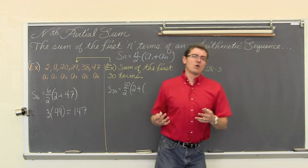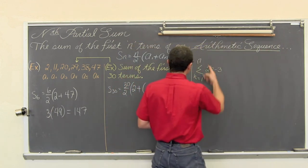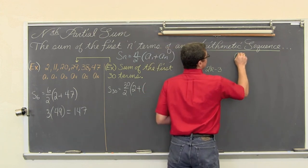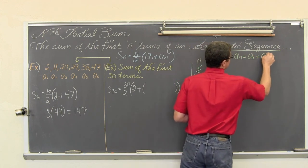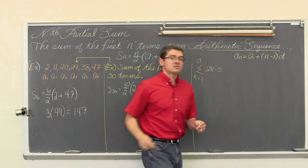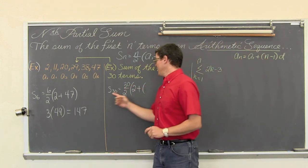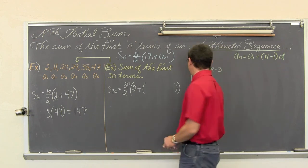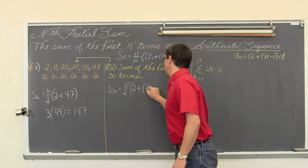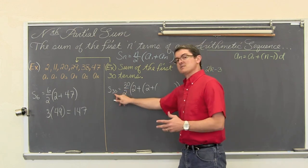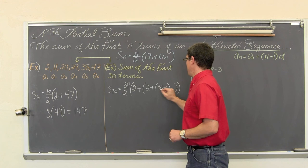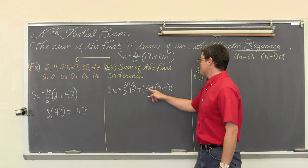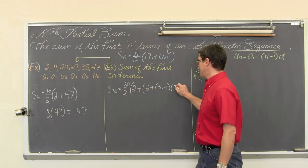a sub 30. Now if you have forgotten, arithmetic sequence, the general form of an arithmetic sequence is a sub n equals a sub 1 plus n minus 1 times d. So I am going to apply this formula inside the second part of my partial sum formula and find out that a sub n value. So a sub 1 is 2 plus n minus 1 and n equals 30 in this example. So 30 minus 1 times my common difference of 9.